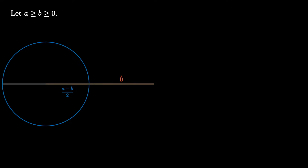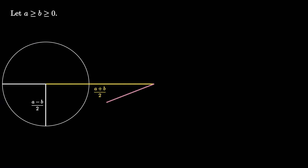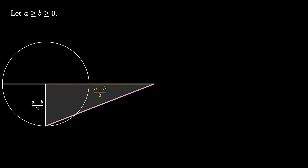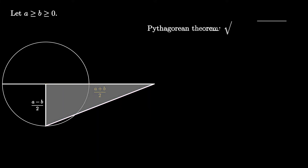The yellow line segment created here, connecting the end of the line segment to the center of the circle, has length (a plus b) over 2. Draw a radius perpendicular to the line segment and connect the endpoints of this radius and the end of the extended line segment. The resulting triangle is a right triangle, so we can use the Pythagorean theorem to determine that the hypotenuse has a length of the square root of ((a minus b) over 2) squared plus ((a plus b) over 2) squared, which simplifies to the square root of (a squared plus b squared) over 2.